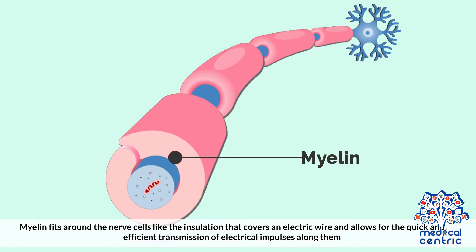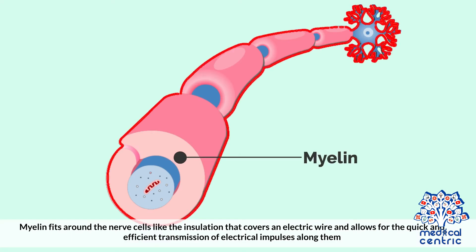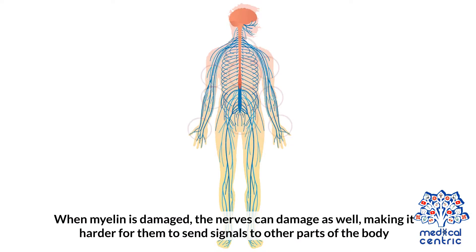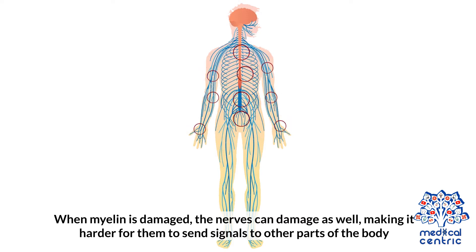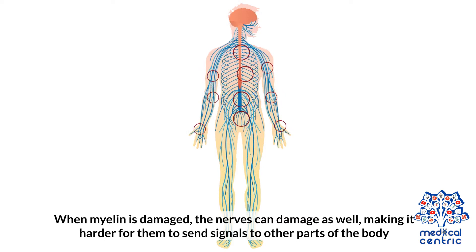Myelin fits around the nerve cells like the insulation that covers an electric wire and allows for the quick and efficient transmission of electrical impulses along them. When myelin is damaged, the nerves can be damaged as well, making it harder for them to send signals to other parts of the body.